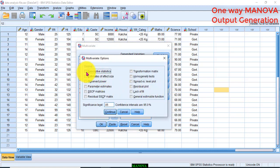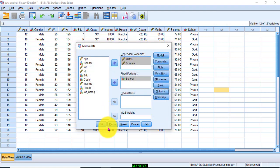Click on Options. Make sure that Descriptive Statistics and Estimates of Effect Sizes. Continue. Click OK.